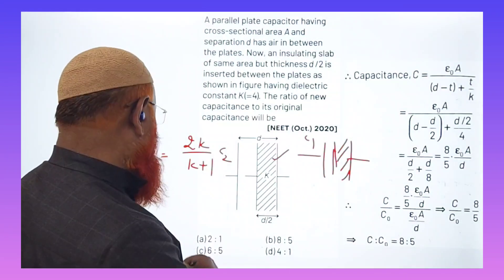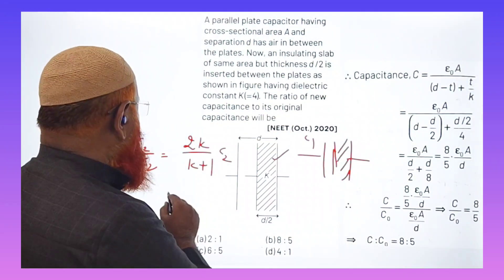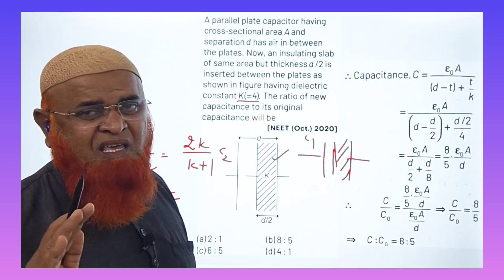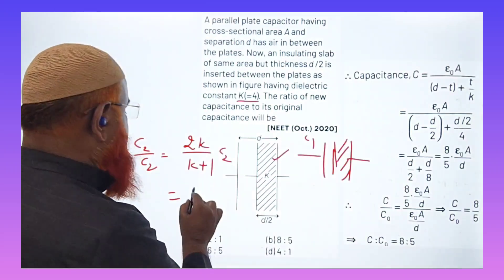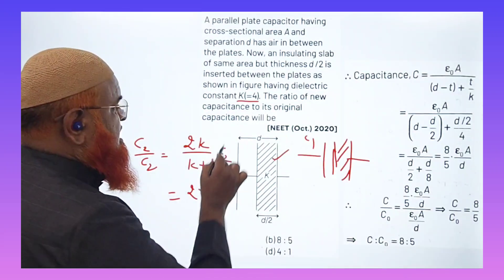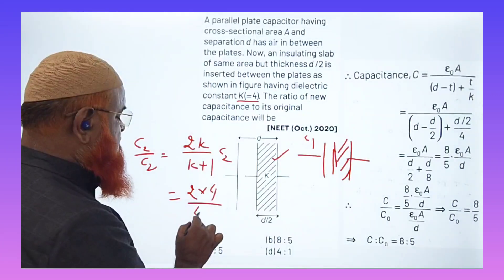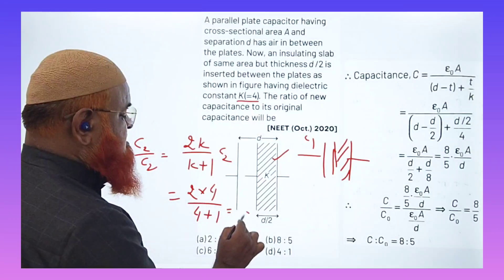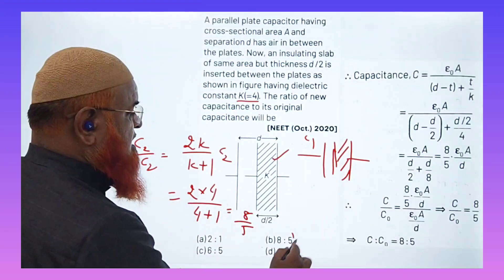How can you solve this problem now? Just see. So what is K value? It is 4. K value is 4, so directly we get the answer. You can just see, 2 into K is nothing but 4 divided by 4 plus 1. That is 8 by 5 is your answer. That's it.